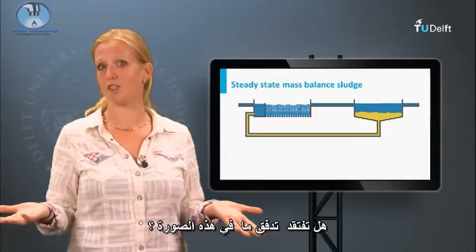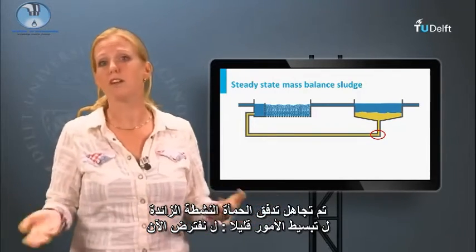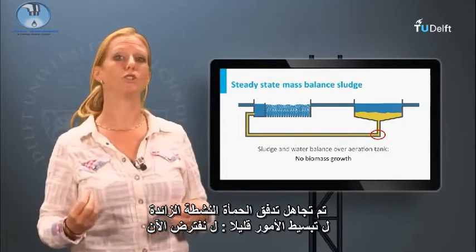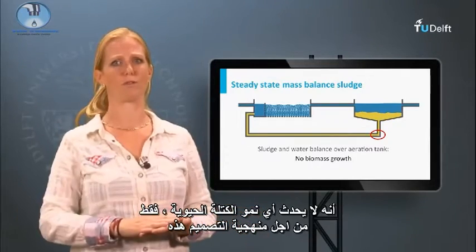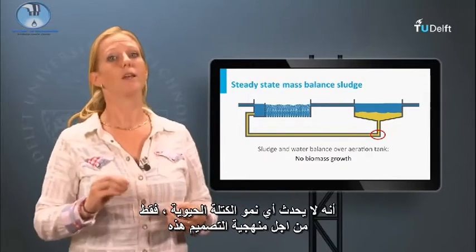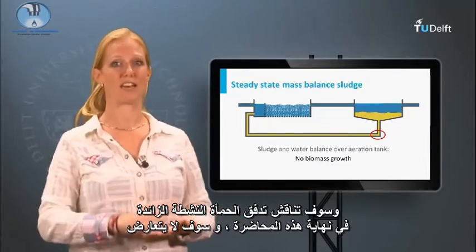Missing a flow in this picture? The waste-activated sludge flow is ignored to simplify things a little bit. For now we assume that there is no biomass growth, just for the sake of this design methodology.